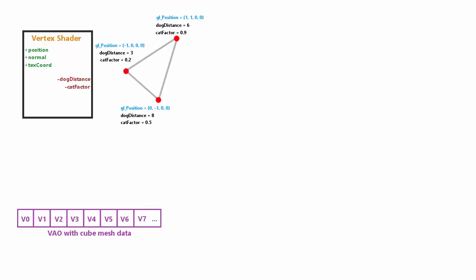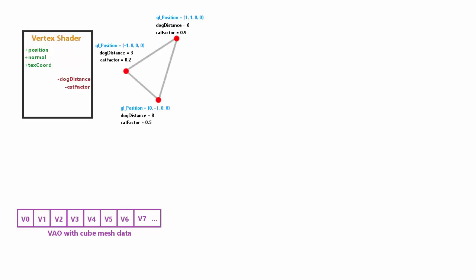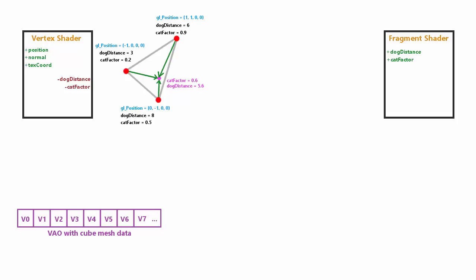Primitives are the building blocks of what you're rendering. We've always rendered triangles in these tutorials, but you can also render lines or even just points. Points are a single vertex, lines are two vertices, and triangles are three vertices. In this example the primitive is triangles. Once OpenGL has assembled the primitives, the fragment shader executes once for each pixel they cover on the screen, using interpolated per-vertex variables to determine the output color.